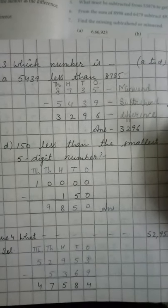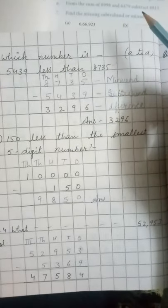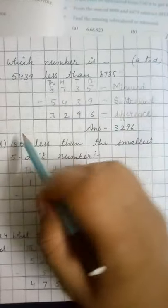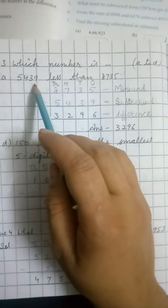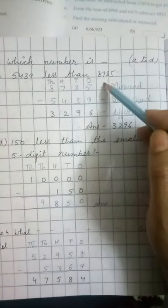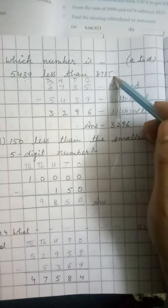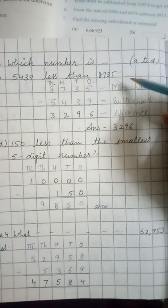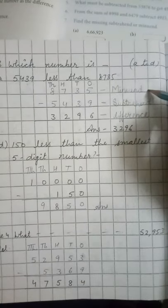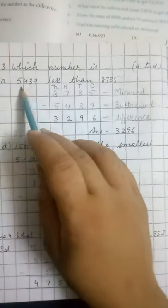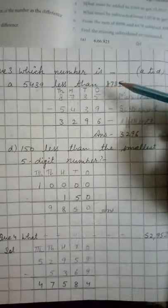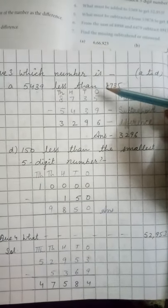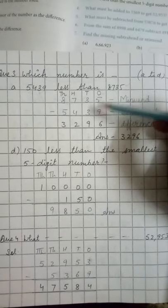Good morning dear students, we are doing exercise 3.4, question number 3. In this question, we are given: which number is 5,439 less than 8,735. We are provided with the minuend and this is our subtrahend. So we will arrange these numbers as per their place value in block form.